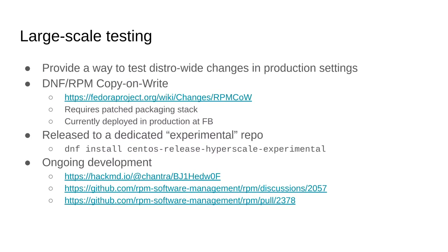The main example of large-scale testing work is the RPM copy-on-write work. We have a fairly extensive patch set on top of RPM and DNF that we've been working on for the past few years, adding copy-on-write support so that if you run RPM on a copy-on-write filesystem such as Btrfs, packaging operations are a lot more efficient because they can leverage filesystem features. This is in active development and we're working with RPM maintainers to find a path to upstreaming. It does work, and Meta in particular runs it in production. We publish the whole stack — RPM, DNF, libdnf — into a dedicated tag and repo.